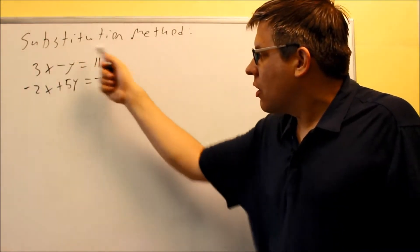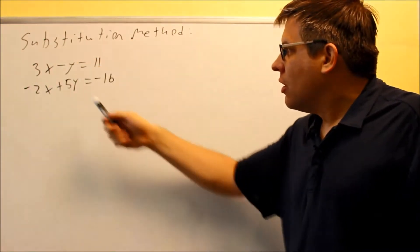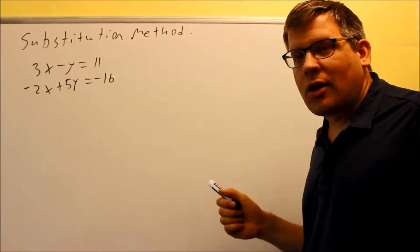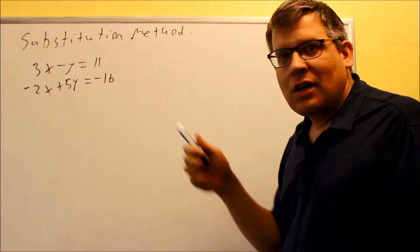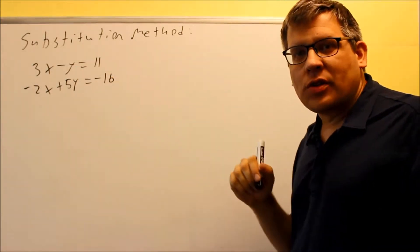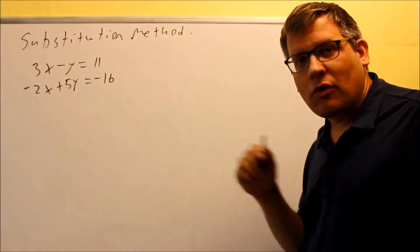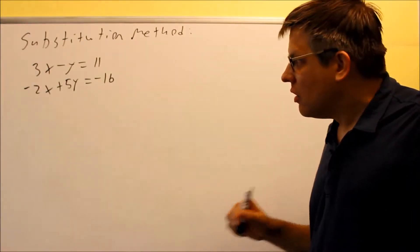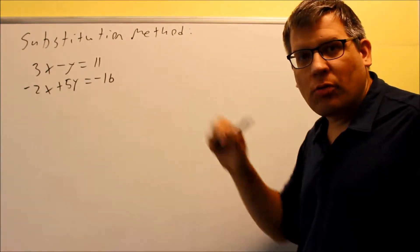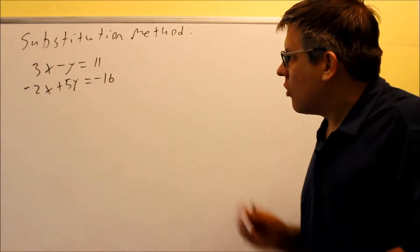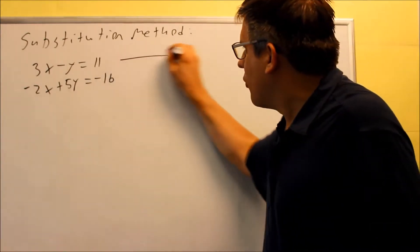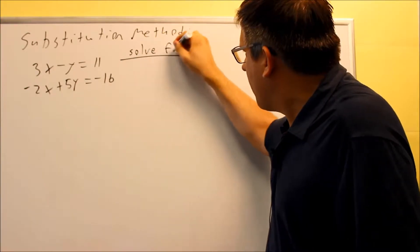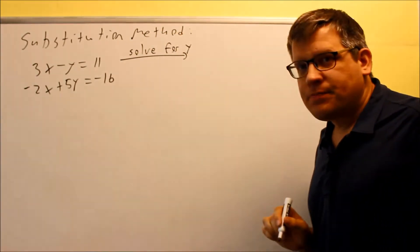If we look at the first equation, the y is going to be the easiest to solve for. The reason is because if I solve for y, that doesn't involve dividing by something later, which means I can avoid using fractions. So what I'm going to do is take the first equation and solve for y.